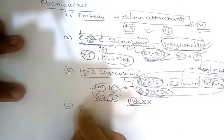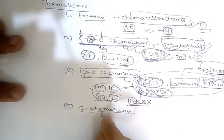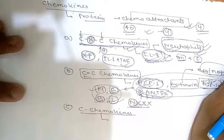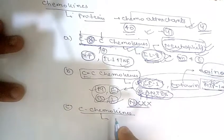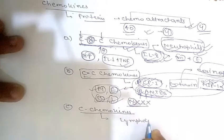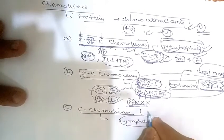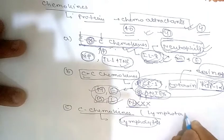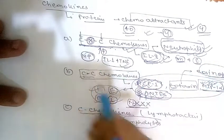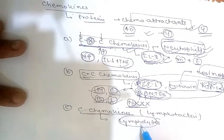The third class is C chemokines, which lack the first and third of the four conserved cysteines. C chemokines are relatively specific for lymphocytes, and one example is lymphotactin. So CXC is for neutrophils, CC is for monocytes and eosinophils, and C is mainly for lymphocytes.